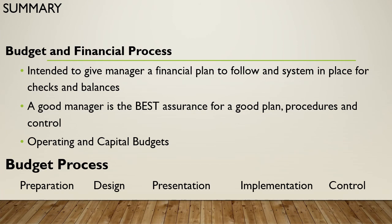To summarize, we look at the budget and financial process as a complete package. It's intended to give the manager a financial plan to follow and a system of checks and balances. A good manager is the best assurance for a good plan, procedures, and control — they are the gatekeeper. We can look at budgets in two ways: operating, which is the annual or fiscal year budget, and capital, which is the large project, large expense budget. The budget process has four parts: preparation, design, presentation, implementation, and control. That concludes our presentation on fiscal resources.